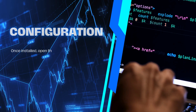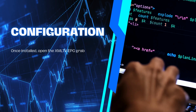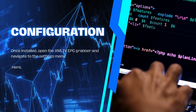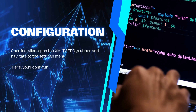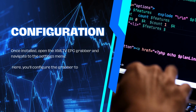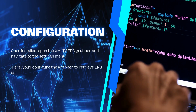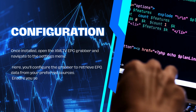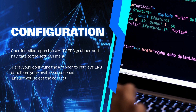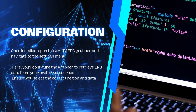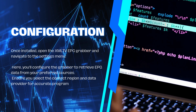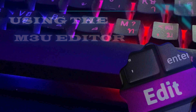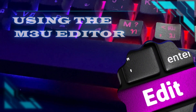Configuration: once installed, open the XML-TV EPG Grabber and navigate to the Settings menu. Here, you'll configure the Grabber to retrieve EPG data from your preferred sources. Ensure you select the correct region and data provider for accurate program information, using the M3U Editor.